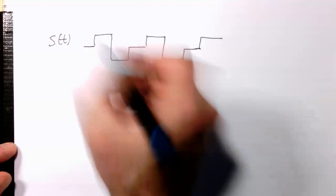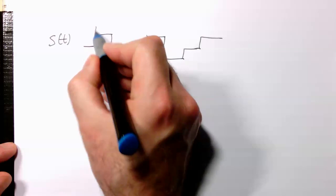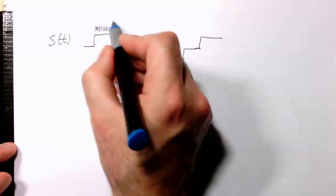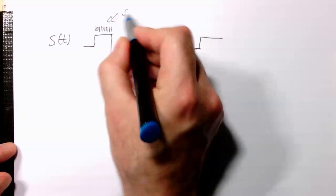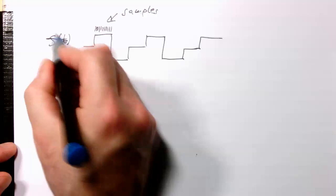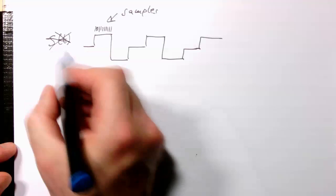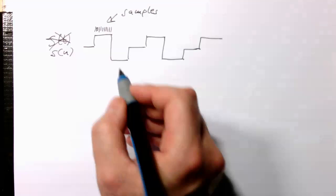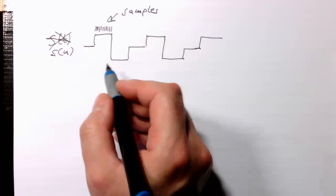So we have our samples. So therefore I should not write S of T, but I should actually write S of N here just to be clear that we are in a sample time domain. That's what makes us really sure here.